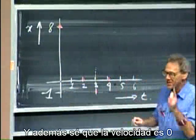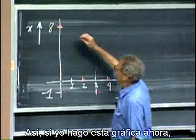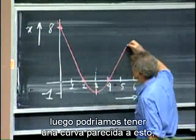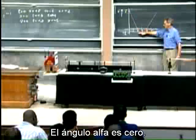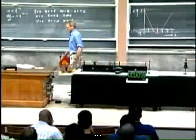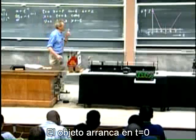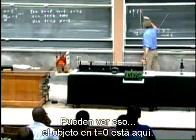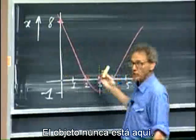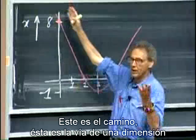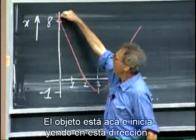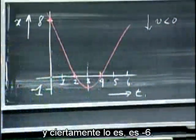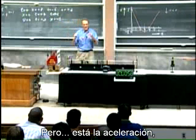I also know that the velocity is 0 at t equals 3. We can check that: the angle alpha equals 0 at that point. The object starts out at t equals 0 with a negative velocity — you can see that. The object at t equals 0 is here; the object is never over here. This is the road, the one-dimensional track on which the object sits. The object is here and starts going in this direction. If it starts going in this direction, the velocity must be less than 0, and indeed it is: it's minus 6.